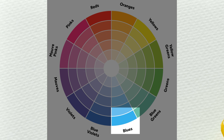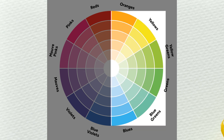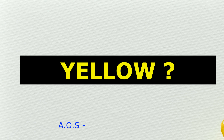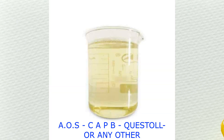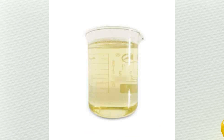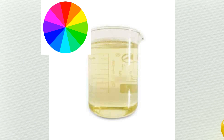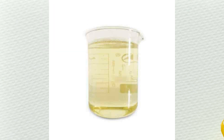We are adding blue color and getting green color. Based on the color wheel, this is possible only when the liquid detergent already contains some yellow or orange color. In liquid detergent, raw materials like AOS, CAPB, Questal, and others, if not in pure or good quality, can introduce a slight yellow or orange color. From the color wheel we can see that blue mixed with yellow gives green — which is exactly what we are getting. So to avoid green color, we must avoid yellow or light-yellow raw materials during the process.